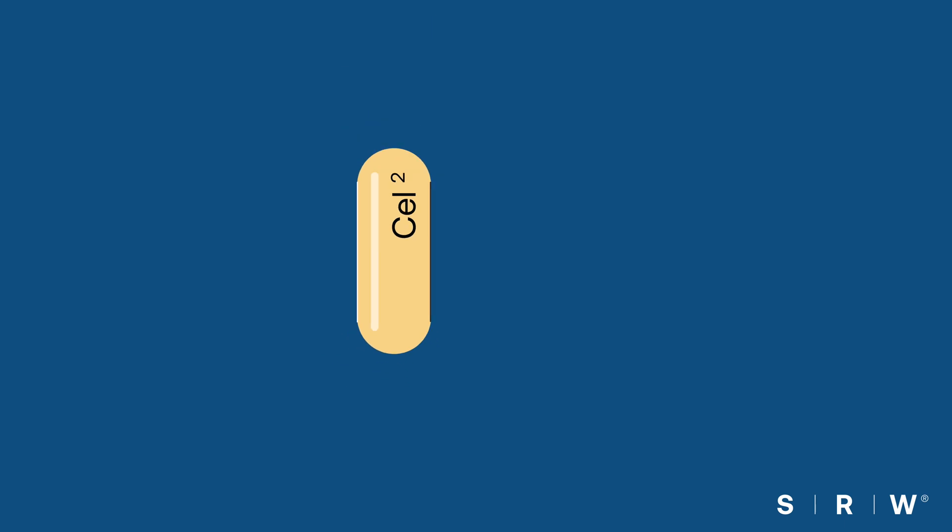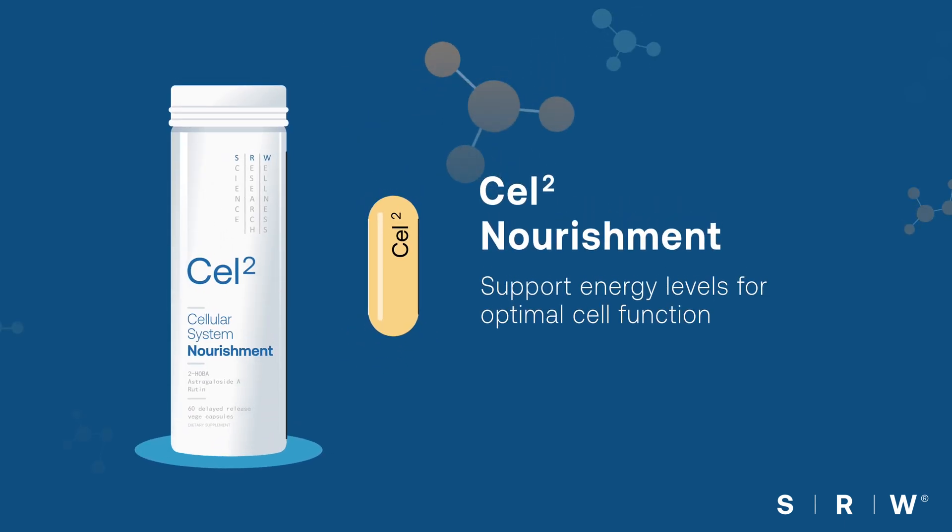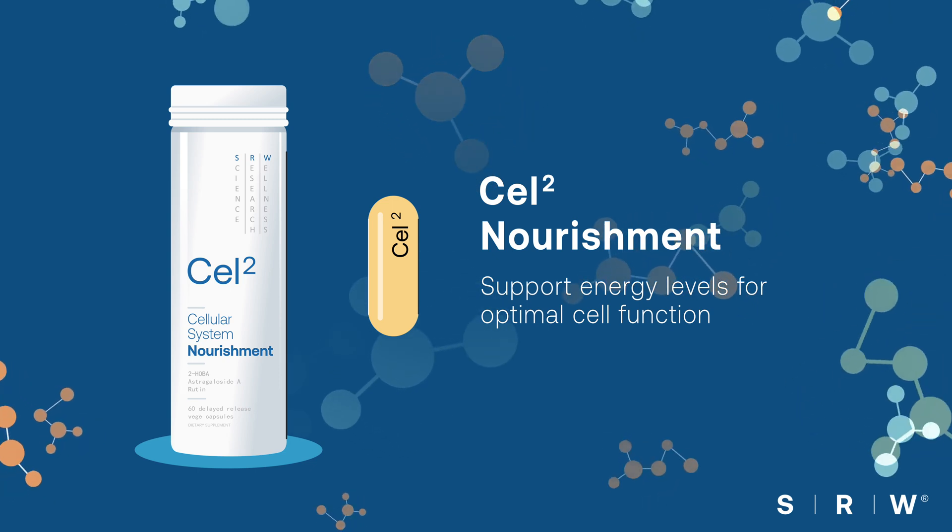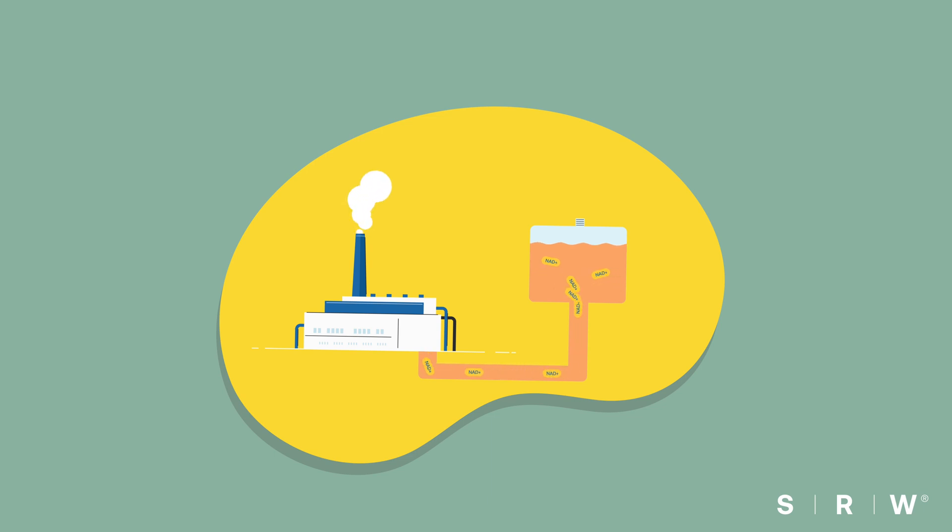Cell 2 Nourishment supports healthy NAD Plus levels, which your cells use to produce energy and to support normal cellular growth and repair processes. As one of the most important coenzymes in the human body, NAD Plus is used by mitochondria to generate cellular energy.